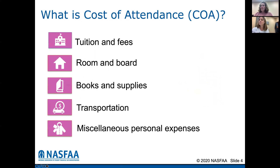What we'd like to do first is talk about some of the definitions that financial aid offices use, which you'll start to see in information that you get back and forth from the colleges. So what exactly is a cost of attendance? A cost of attendance is a number that financial aid offices use to determine the total cost of college for your student. It's made up of five different factors: tuition and fees, room and board, books and supplies, transportation, and miscellaneous expenses.